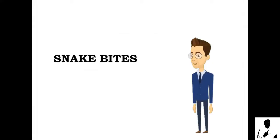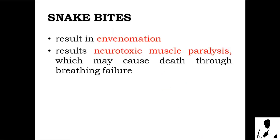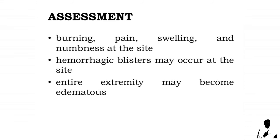Snake bites: bites by venomous snakes may result in envenomation and injected poison. Snake bite effects include neurotoxic muscle paralysis, which may cause death through breathing failure. Other significant effects include bleeding as a result of coagulation dysfunction, muscle damage due to the release of kidney toxins, and red blood cell breakdown. Knowledge of snakes indigenous to the area is important for swift and appropriate treatment. Assessment of snake bite includes burning pain, swelling, and numbness at the site; hemorrhagic blisters may occur, and the entire extremity may become edematous.